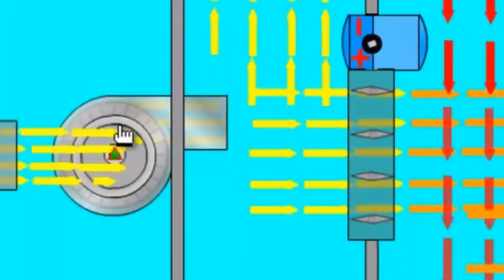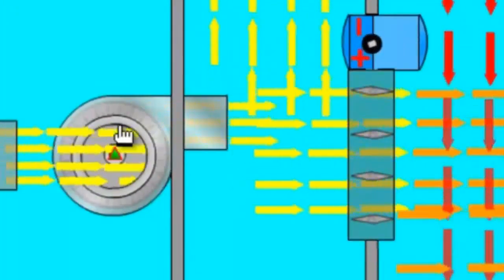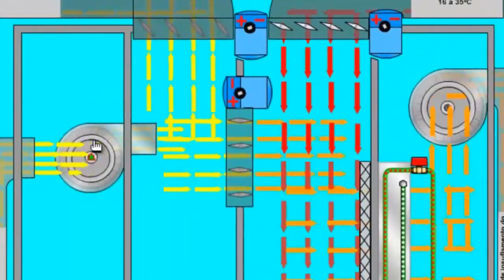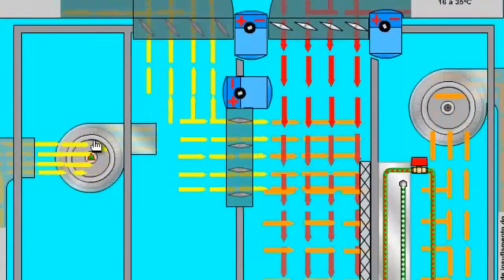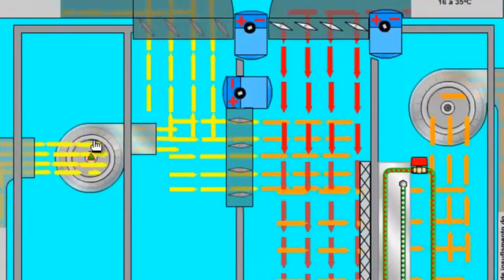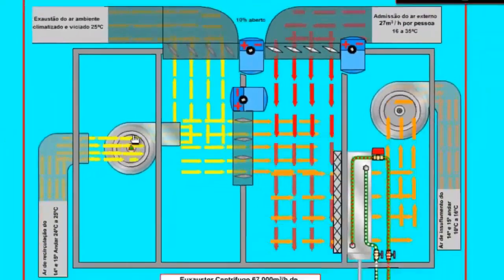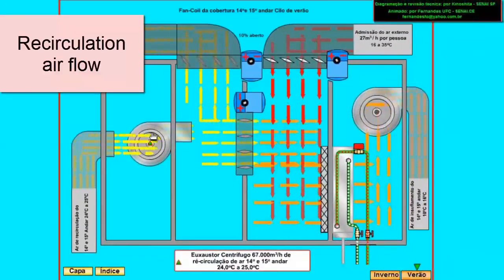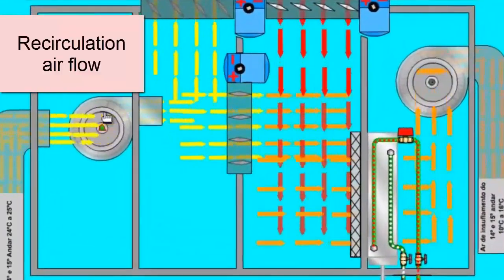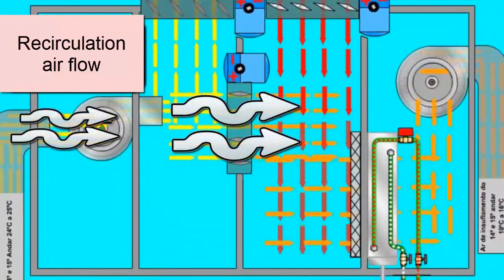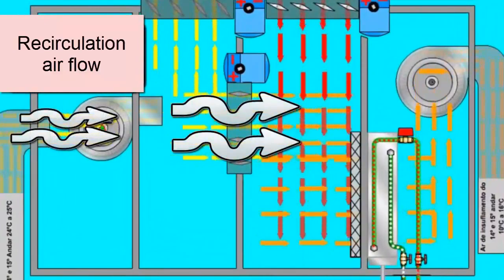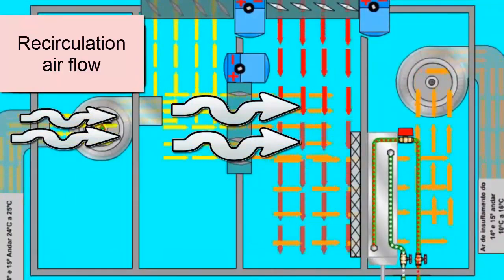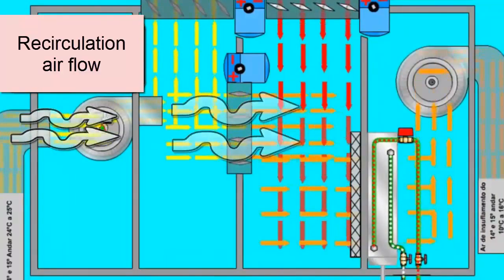Recirculation centrifugal fan. This fan is responsible for sucking the recirculation flow and sending it to the heat exchanger of the air handling unit. At this moment, the flow value is 67,000 cubic meters per hour of air.